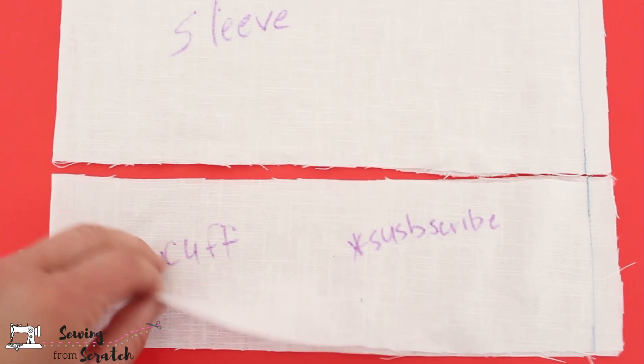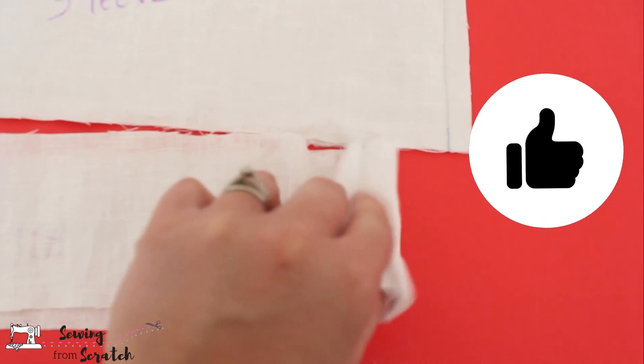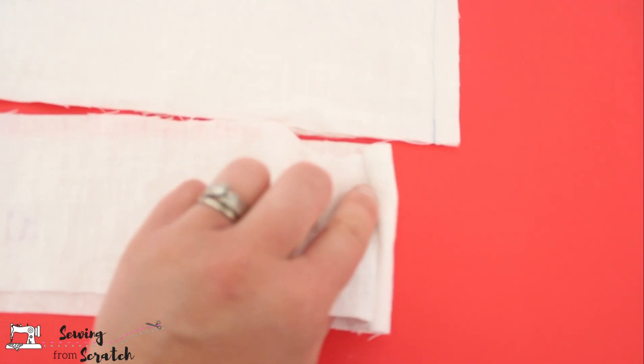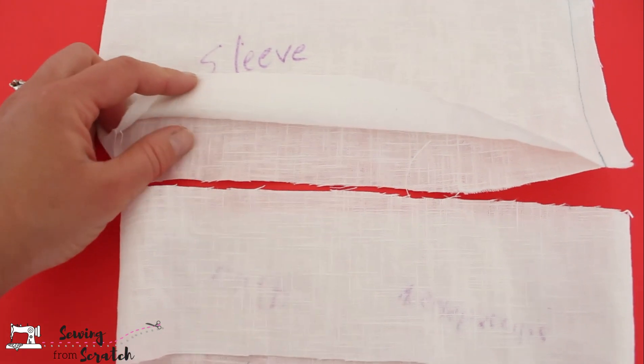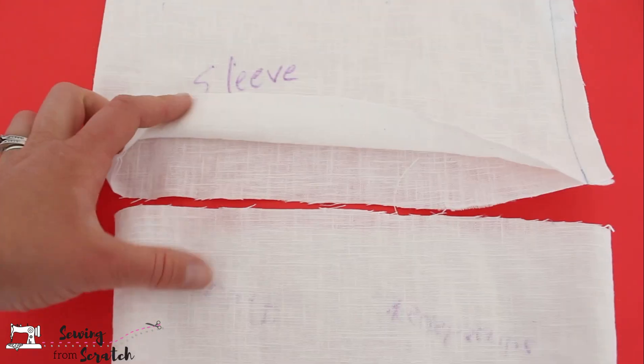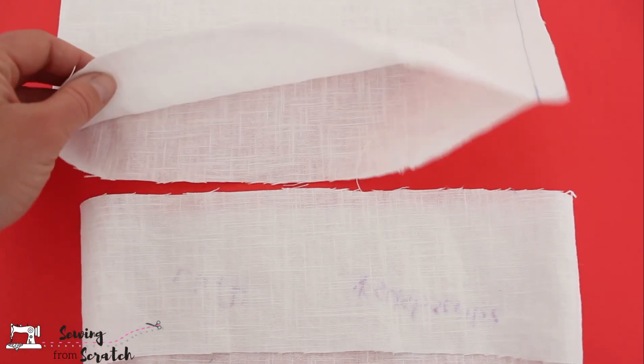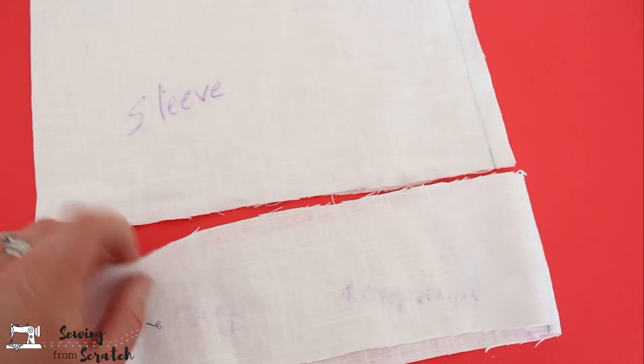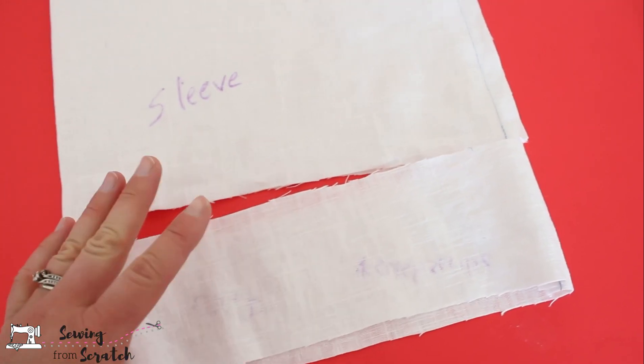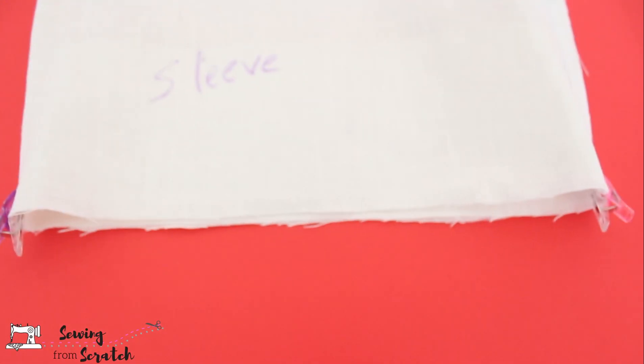Now what we need to do is turn our cuff right side out. So now the cuff is right side out—you can see my writing is hidden in there and the seam is hidden. But now I'm going to slide it inside here. This is the right side of my sleeve and this is the right side of my cuff, so I'm going to slide it in there so that they are right sides together just like you normally would. However, we are not folding the cuff in half, so the cuff is still the full width. Let me go ahead and do that.